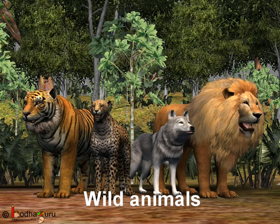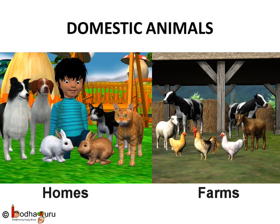Animals which live in the jungle are called wild animals. Tiger is a wild animal. Animals that can be kept at farms or homes are called domestic animals.